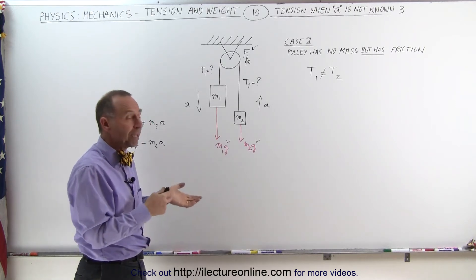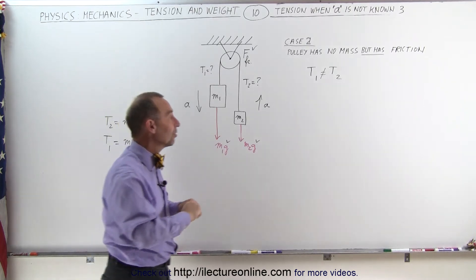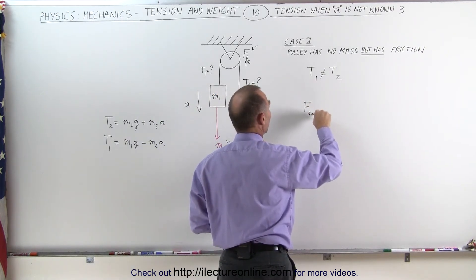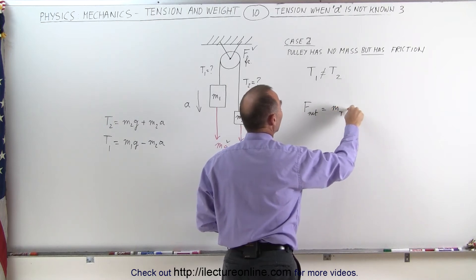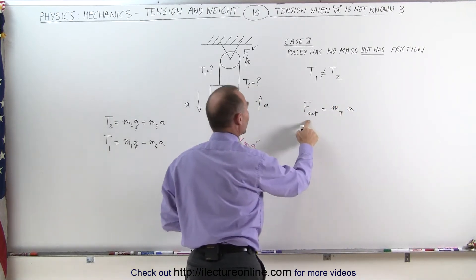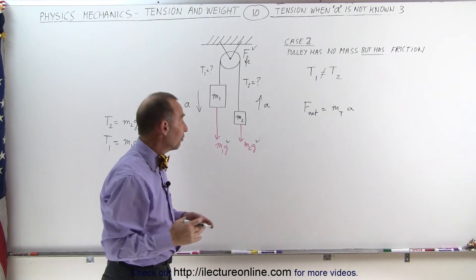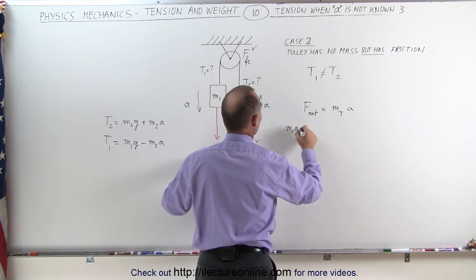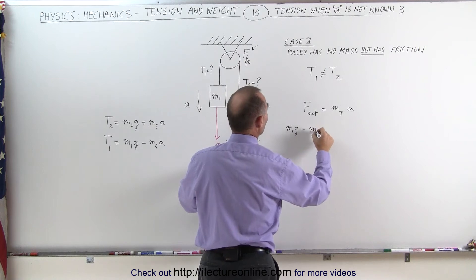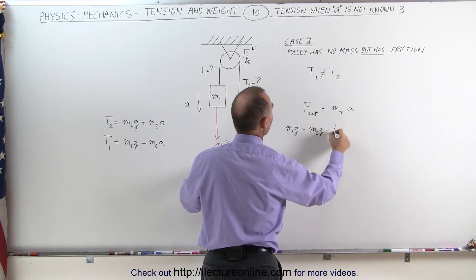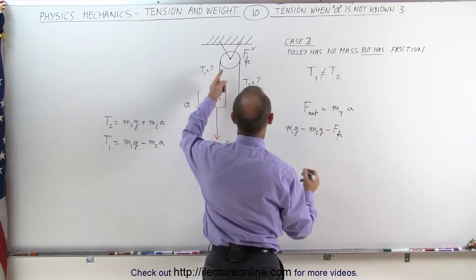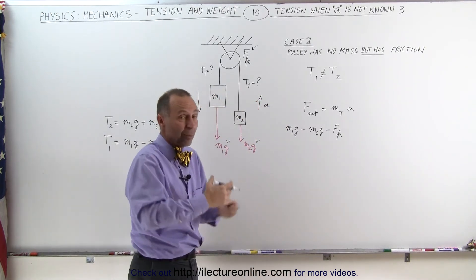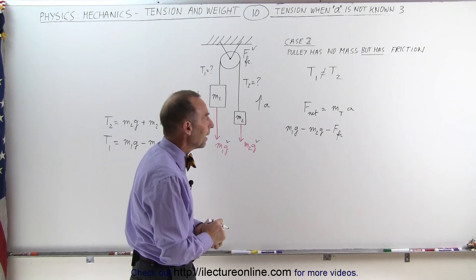Assuming that it is big enough and there will be acceleration, we can still use the equation that F net is equal to the total mass times acceleration. In this case, there's three forces contributing to the net force. We have m1g trying to accelerate the system, minus m2g trying to hold back the acceleration, and minus the friction force in the pulley. Typically, the friction force will be given to you.